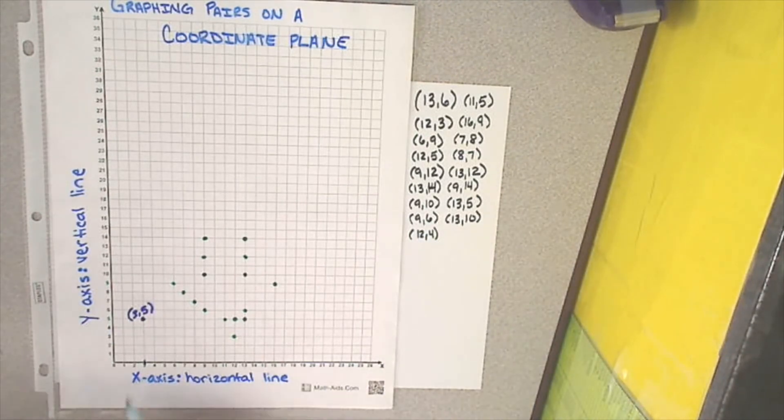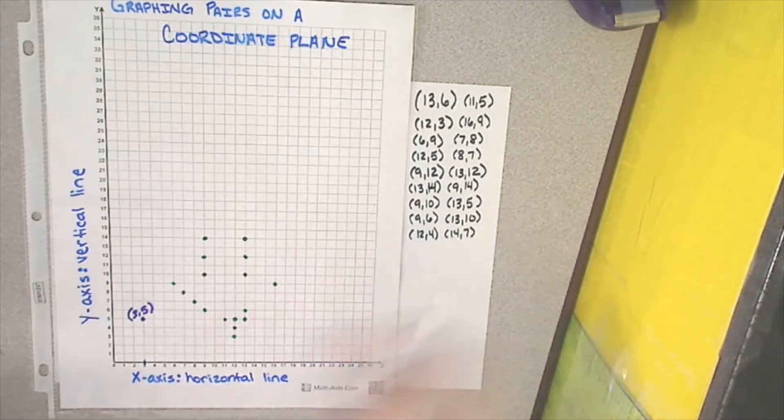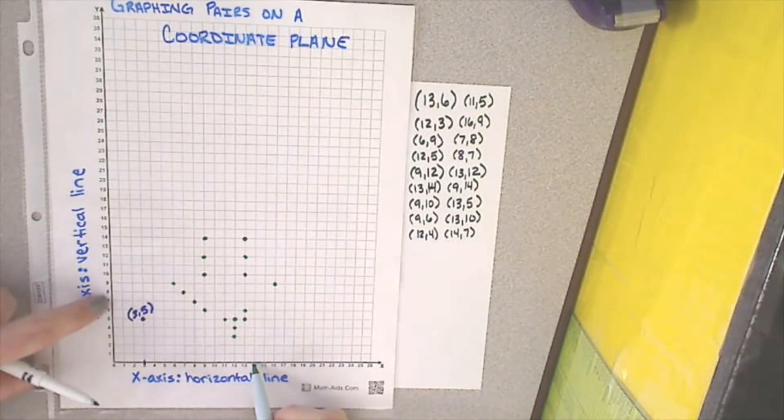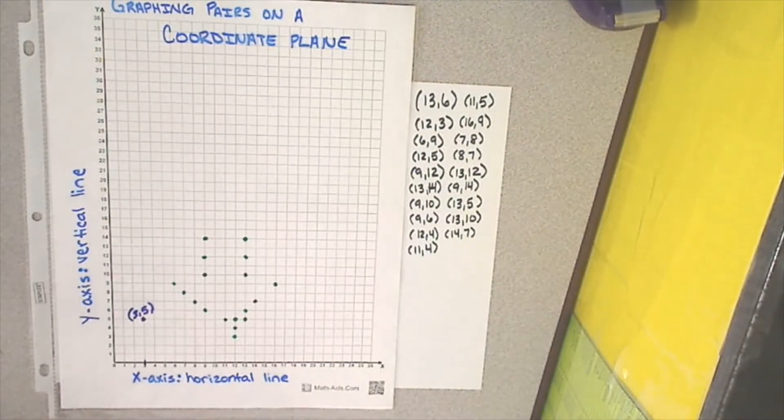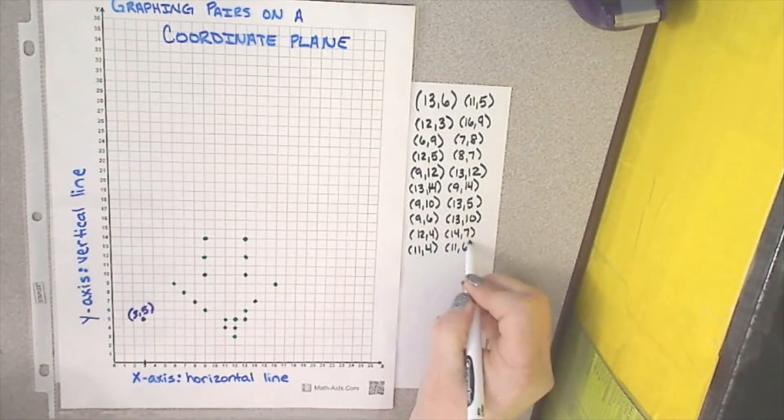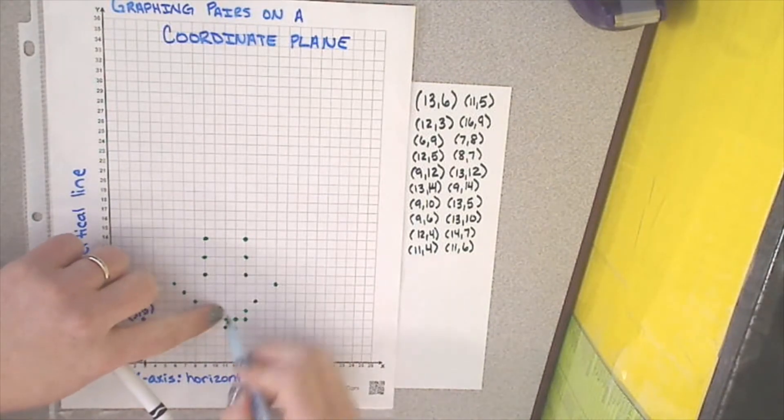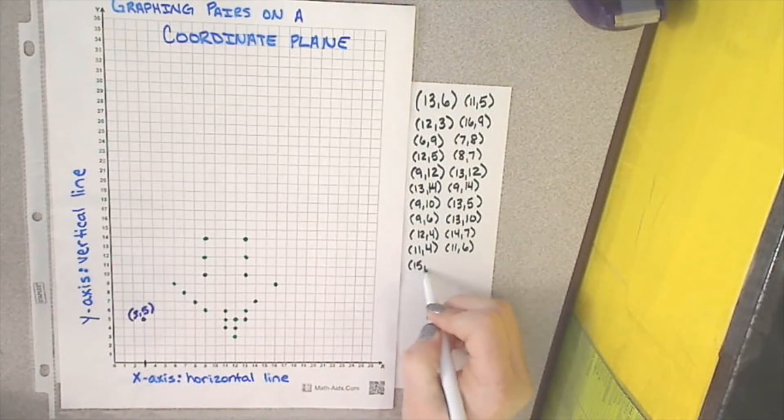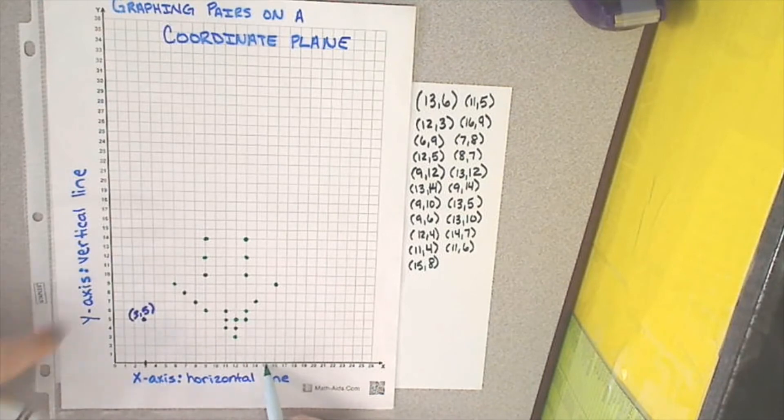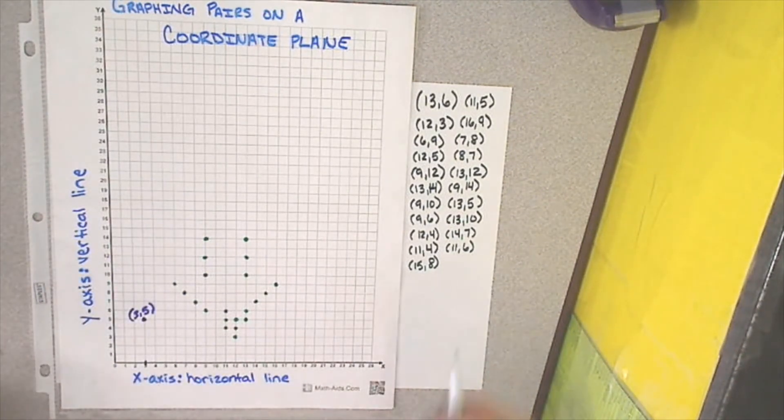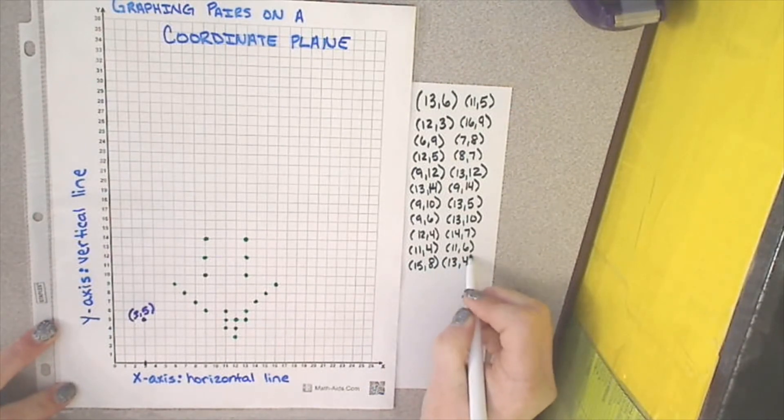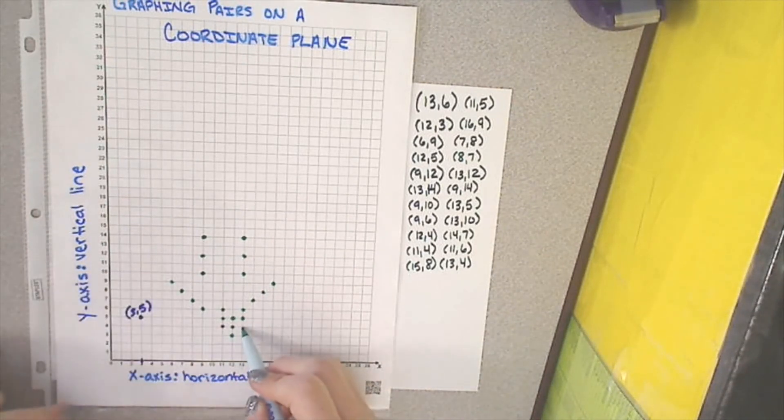12 comma 4. Come down to 12. Find where 12 and 4 intersect. 14 comma 7. Come down to 14. Find where 14 and 7 intersect. 11 comma 4. Come down to 11 and find where 11 and 4 intersect. 11 comma 6. Where 11 and 6 intersect. 15 comma 8. I'm going to come all the way down to 15 and find where 8 and 15 intersect. And last, but certainly not least, 13 comma 4. So I'm going to come to 13, and I'm going to find where 13 and 4 intersect.